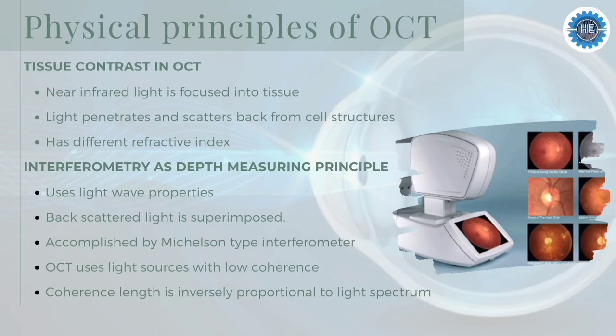The main idea of Optical Coherence Tomography is to use light sources with low coherence. In this case, there is only apparent interference if the two arms of the interferometer are equally long. The coherence length is inversely proportional to the spectrum of the light. Therefore, OCT uses spectrally broad light sources — the broader the spectrum of the light source, the better the axial resolution.